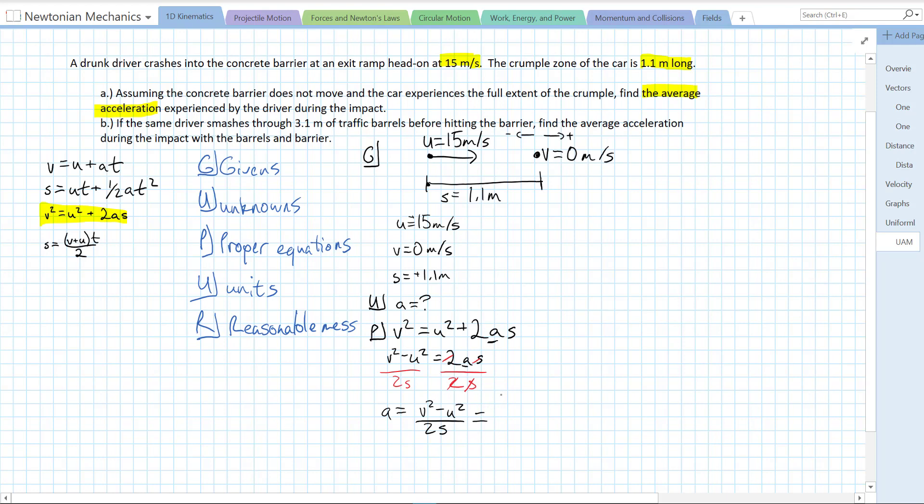Now that I have the equation solved, I just plug in the numbers. We know V is 0, so 0 squared minus U is 15, 15 meters per second, 15 squared over 2 times 1.1. I plug that into a calculator. 0 minus 15 squared, that whole quantity divided by parentheses 2 times 1.1. Make sure you put your denominator in parentheses. And I get negative 102.27. So to correct significant digits, I get negative 1.0 times 10 to the 2.